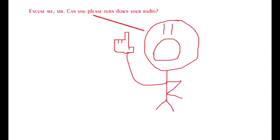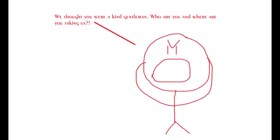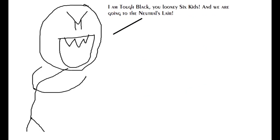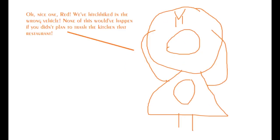Excuse me, sir, can you please turn down your radio? No, keep quiet back there. We thought you were a kind gentleman. Who are you and where are you taking us? I'm Tuff Black, you Luna 6 kids, and we're going to the neutral slayer. Tuff Black? Guys, we've been abducted. Aw, nice one, Red. We hitchhiked in the wrong vehicle. None of this would have happened if you didn't plan to trash the kitchen in that restaurant.